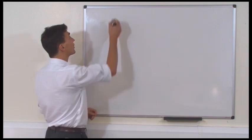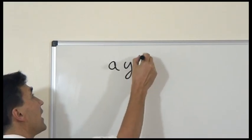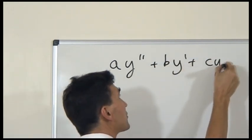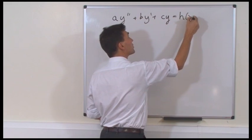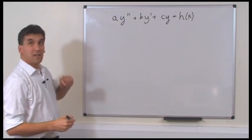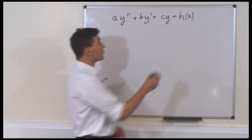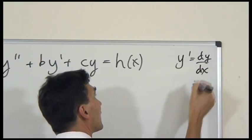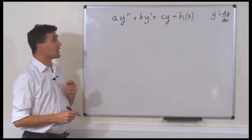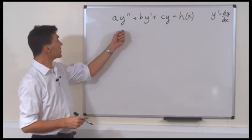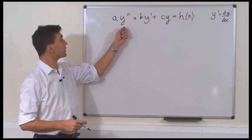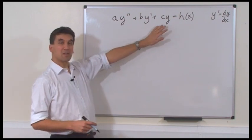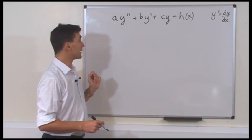So let's take, as an example, the differential equation A times Y double prime plus B times Y prime plus C times Y is some function H of X. So Y is supposed to be a function of X, and Y prime is a shorthand for DY by DX. That's a second-order differential equation because it involves two derivatives. Y double prime is D squared Y by DX squared. It's linear because there are no things like Y squared or Y times Y prime or anything like that.